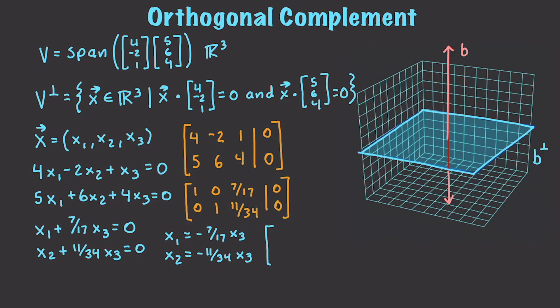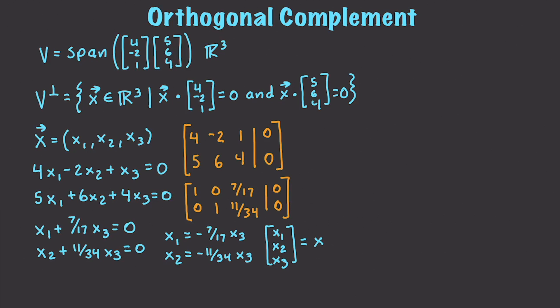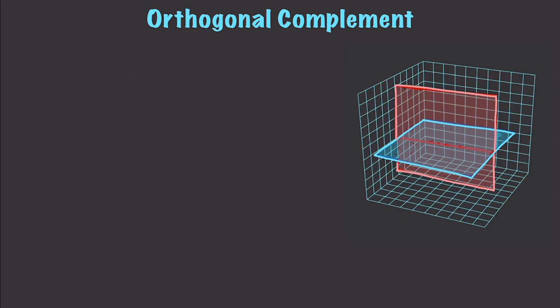So, here we would have X1, X2, X3 is equal to X3, negative 7 over 17, negative 11 over 34, and 1. And the orthogonal complement is going to be given by this column vector, which means that V perpendicular is equal to the span of this guy right here. And so, this is a line that is orthogonal to the plane V inside of R3 space. And just so you know, two planes cannot be orthogonal because they must both contain the vector where they both meet. So, it makes sense that our previous answer was a vector and not a plane.